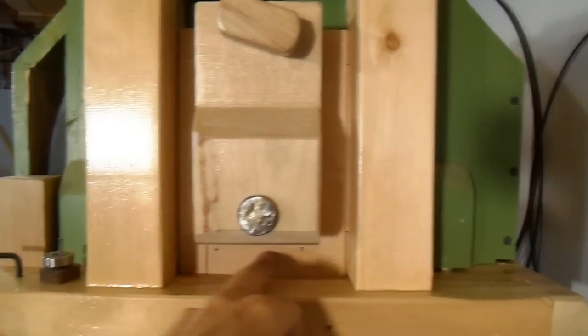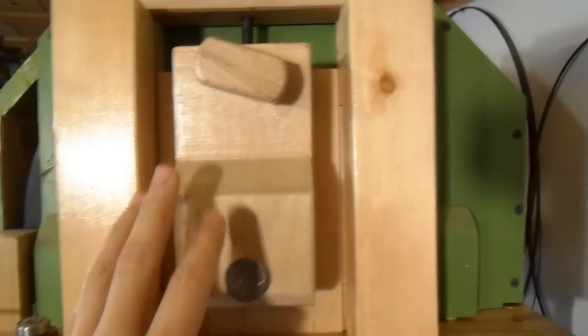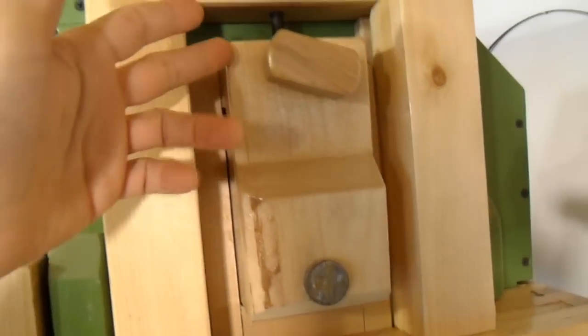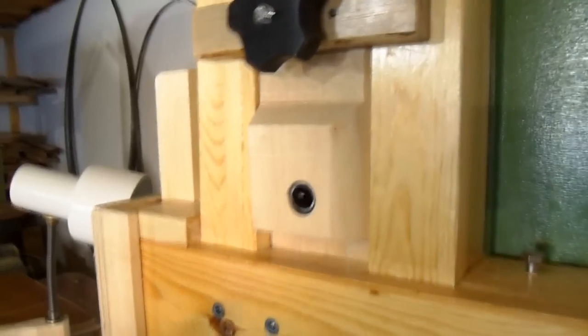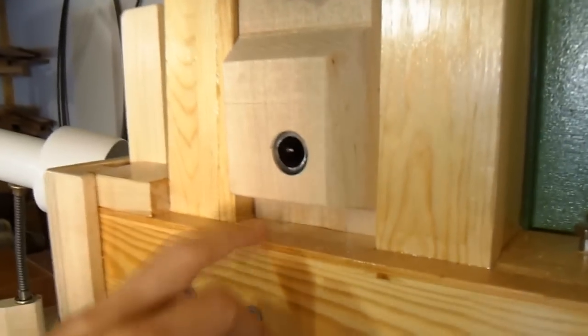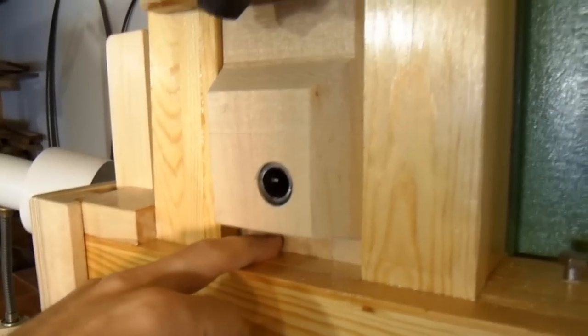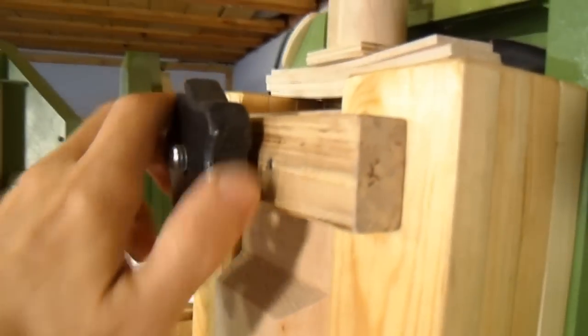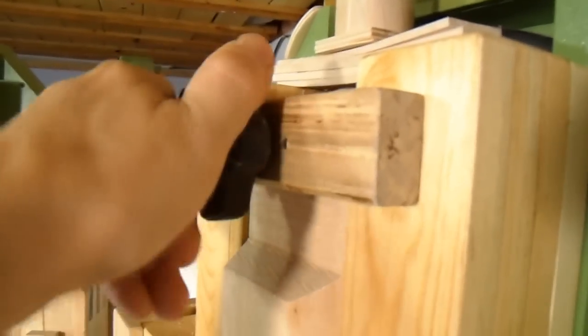In my previous bandsaw I built a frame that holds the upper wheel mount. The frame slides up and down and then inside that frame the upper wheel mount tilts. For this new bandsaw, there's only one block and it moves up and down and it tilts. It's supported inside the frame here, it slides in the slot. And then this holds it from tilting forward and this knob allows it to tilt.